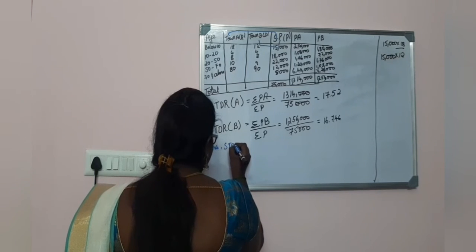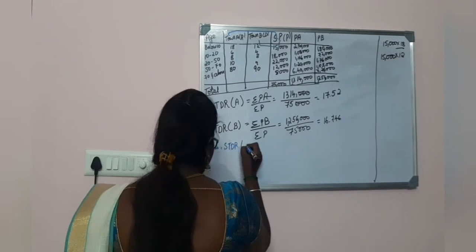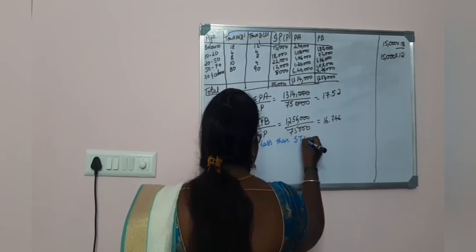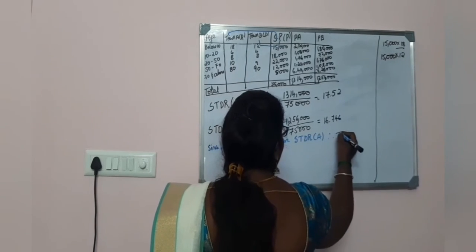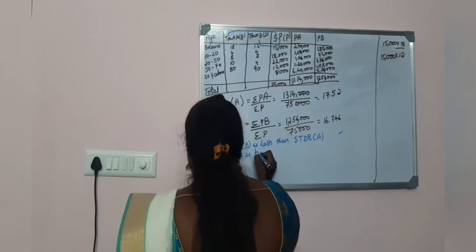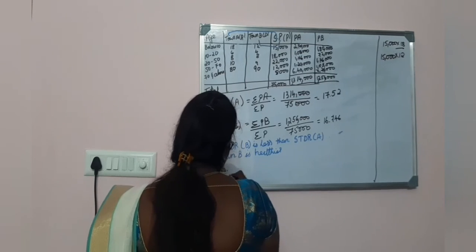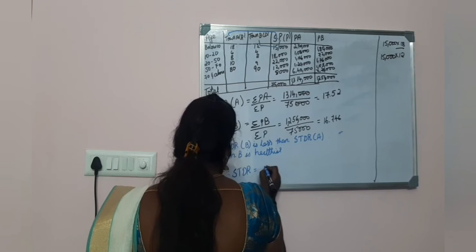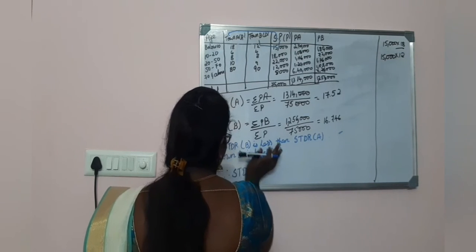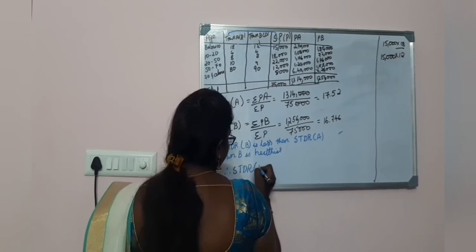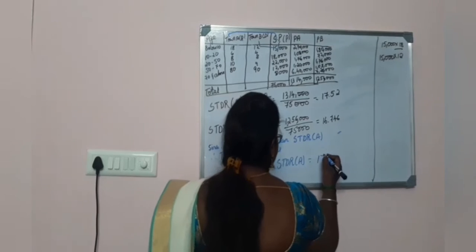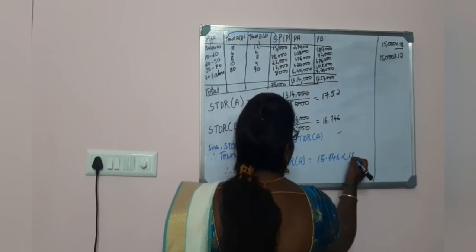Comment: Since STDR of B is less than STDR of A — that is 16,746 is less than 17.52 — therefore town B has a lower death rate than town A. Hence it is proved that town B has fewer deaths per 1,000 compared to town A.